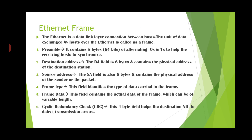Second, destination address. The destination field is 6 bytes and contains the physical address of the destination station. Source address. The SA field is also 6 bytes and contains the physical address of the sender in the packet. Frame type. This field identifies the type of data carried in the frame. Frame data. This field contains the actual data of the frame, which can be of variable length. The last field, cyclic redundancy check (CRC), is a 4-byte field which helps the destination NIC to detect transmission errors. These are the different fields of the Ethernet frame.